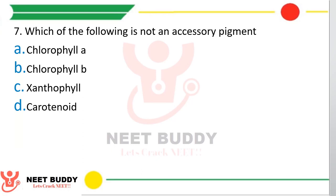Question 7. Which of the following is not an accessory pigment? Option A: Chlorophyll A, option B: Chlorophyll B, option C: Xanthophyll, or option D: Carotenoid. The correct answer is option A — chlorophyll A is not an accessory pigment.